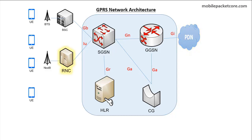The RNC refers to Radio Network Controller, and it controls the 3G sites. The Node-B term is the name of the 3G sites. The BTS term is the name of the 2G sites.